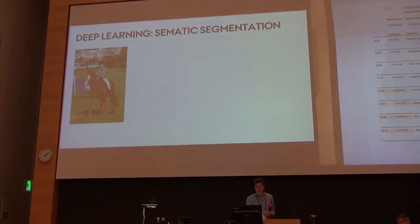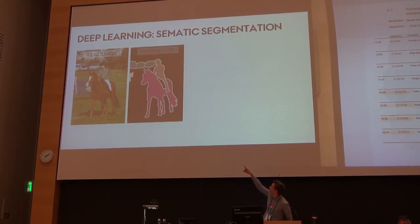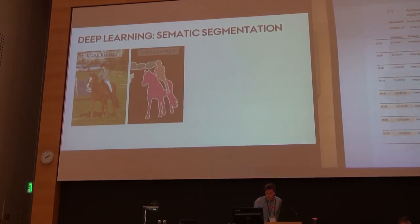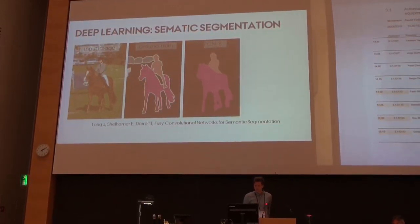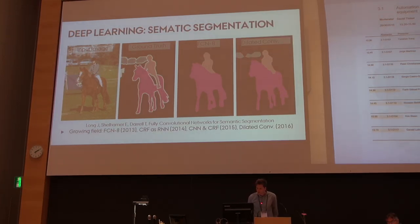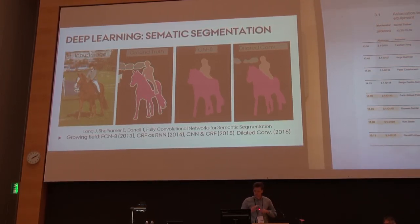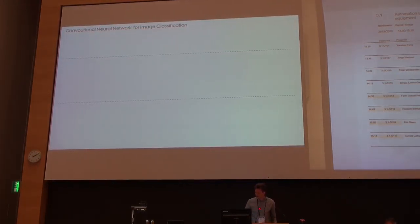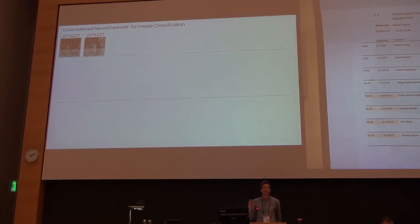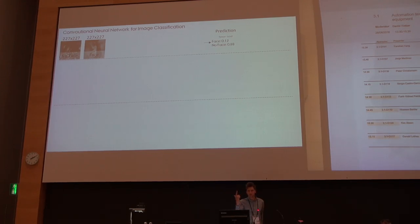This brings us to semantic segmentation, where we have an input image and the goal of the algorithm is to classify every single pixel as an object type — vehicles, persons, walls, and so on. The algorithm I'm using is called the Fully Convolutional Network for Semantic Segmentation. I haven't invented this; I'm just using existing work to show the potential of these algorithms. In 2016, just a few months ago, a new model was released that is simpler and has better performance — there's a lot happening in this field.